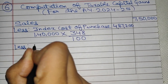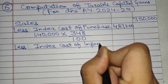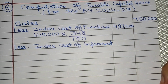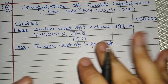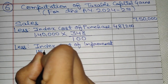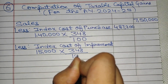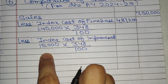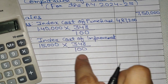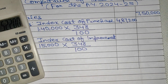फिर उसके बाद less करोगे index cost of improvement। एक improvement 2001-02 का बताया गया है और 1 April 2001 के बाद हुआ कोई भी improvement आप यहाँ पे लोगे। यह 2001-02 में है यानि 1 April 2001 से 31 March 2002 के बीच, तो यह consider होगा। Cost of improvement 15,000 × sale year index 348 ÷ improvement year index 100 = Rs. 52,200।